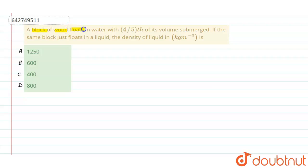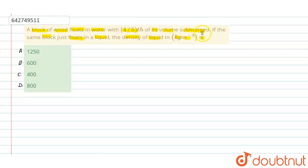A block of wood floats in water with four-fifths of its volume submerged. If the same block just floats in a liquid, the density of the liquid in kg/m³ is to be found. We have four options: (a) 1250, (b) 600, (c) 400, (d) 800.